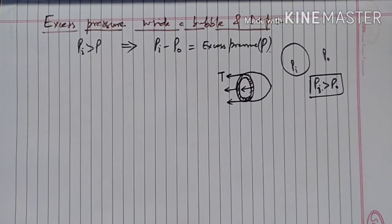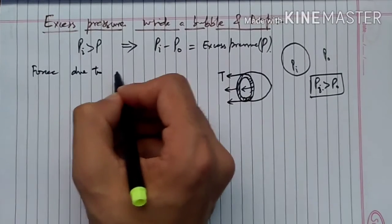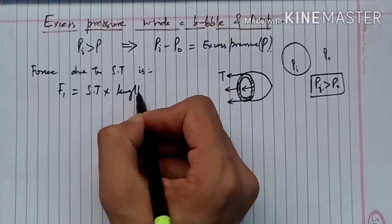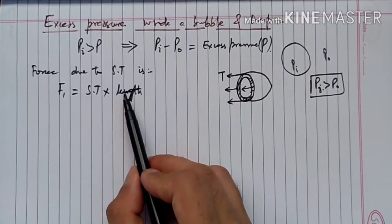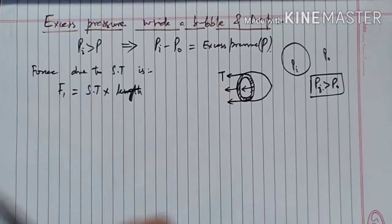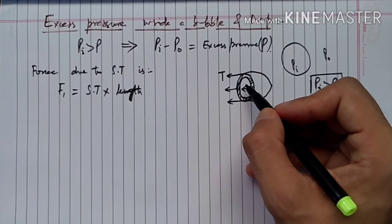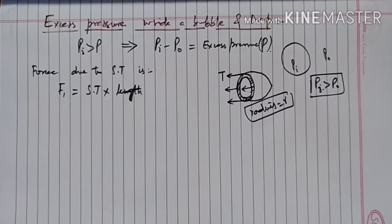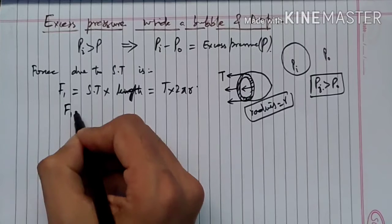Surface tension is force per unit length. So force due to surface tension, let's call it F1, equals surface tension T multiplied by the length. The relevant length is the circumference of the circular cross-section, which is 2πR. So the force due to surface tension is F1 = T × 2πR.